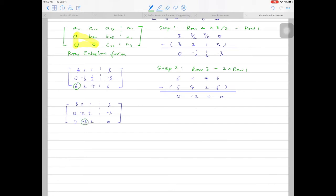Next, we'll remove the second entry of the third row. What we can do is to multiply row 2 by 4, minus row 3. Row 2 multiplied by 4 will have 0, minus 2, 2, and minus 12.